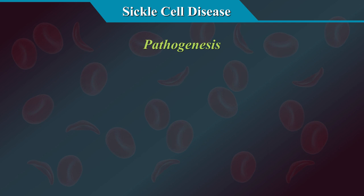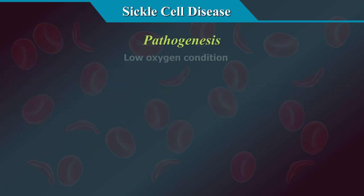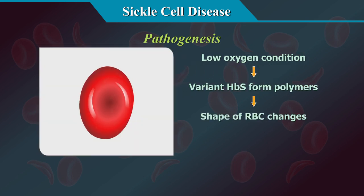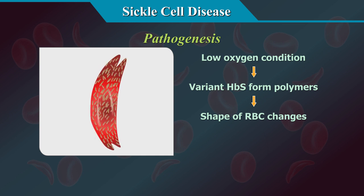Sickle cell anemia is an inherited disorder arising from a mutation in the beta-globin gene by a single amino acid substitution, resulting in the formation of an abnormal HbS. In low oxygen conditions, this variant HbS forms polymers, changing the shape of the RBC from a round disc to a characteristic crescent or sickle shape.